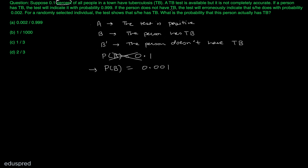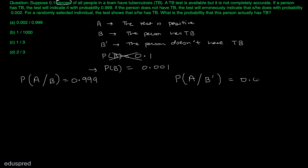Let's see what other information is given. If a person has TB, the test will indicate it with probability 0.999. This implies that the probability of A given B is equal to 0.999. And if a person does not have TB, the test will indicate that he does with probability 0.002. So the probability of A given B complement is equal to 0.002.